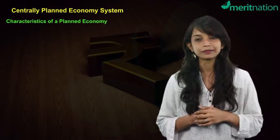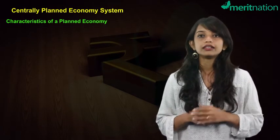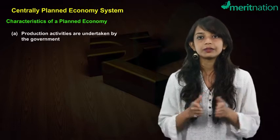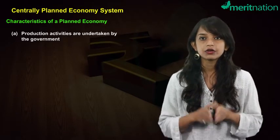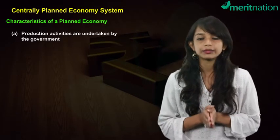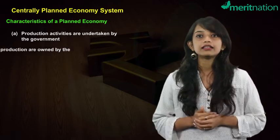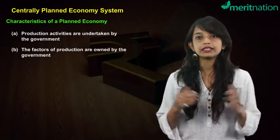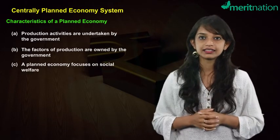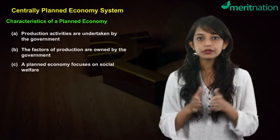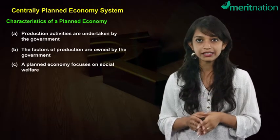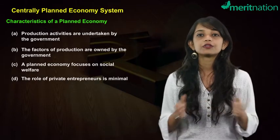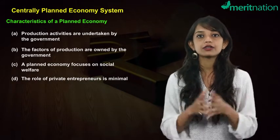First, the production process under a centrally planned economy is undertaken and governed by the government. Second, the factors of production are owned by the government. Third, the main focus of a centrally planned economy is on social welfare.